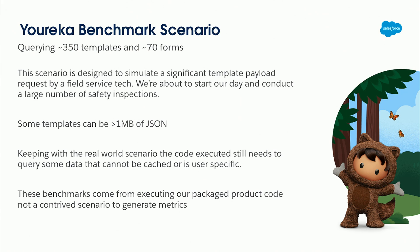Let's talk about the benchmark scenario. This was with our actual product code — an intense use case where I'm a safety tech getting ready to go out in the field. I have to sync 350 templates and 70 forms, all needed offline. Some of these templates can be over a megabyte of JSON. I wanted to push it to the limits to get really good data on how performance would change, and I ran this using our actual production code.